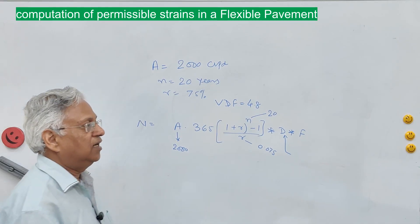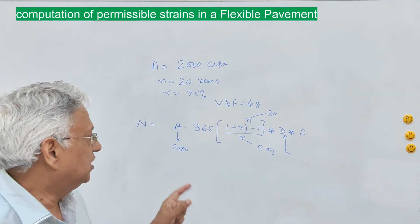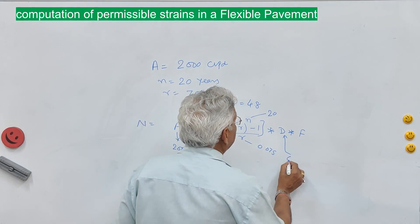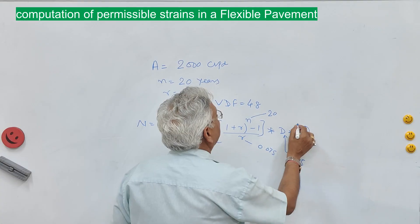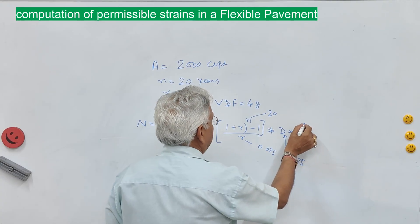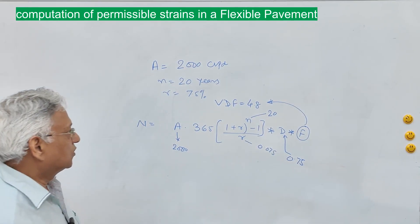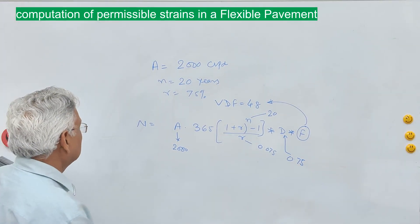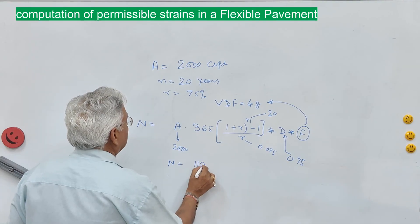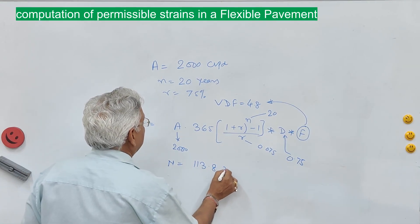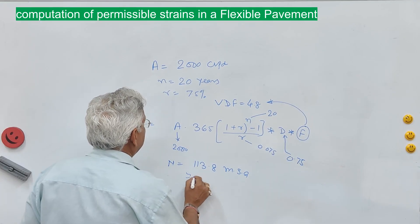Here r is 0.075 (7.5% traffic growth rate), n is 20 years, D is the directional distribution factor. For a four-lane divided highway, the D value is 0.75, and F is the VDF, which we assume is 4.8.